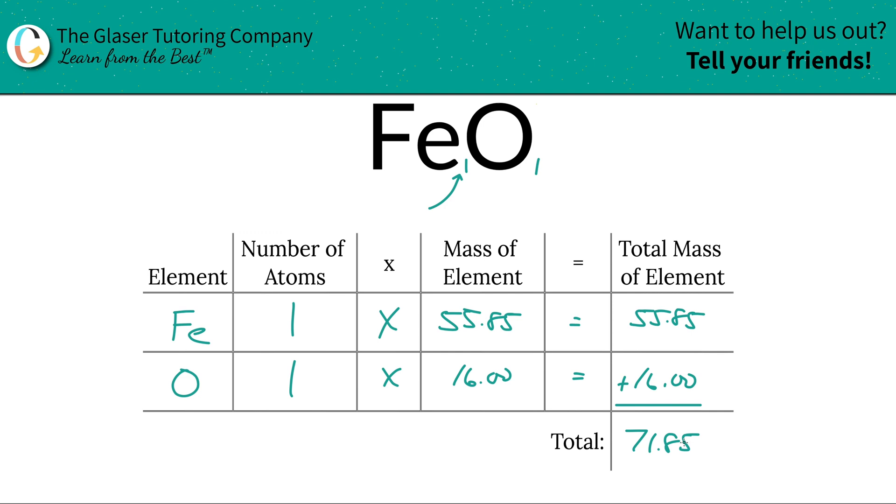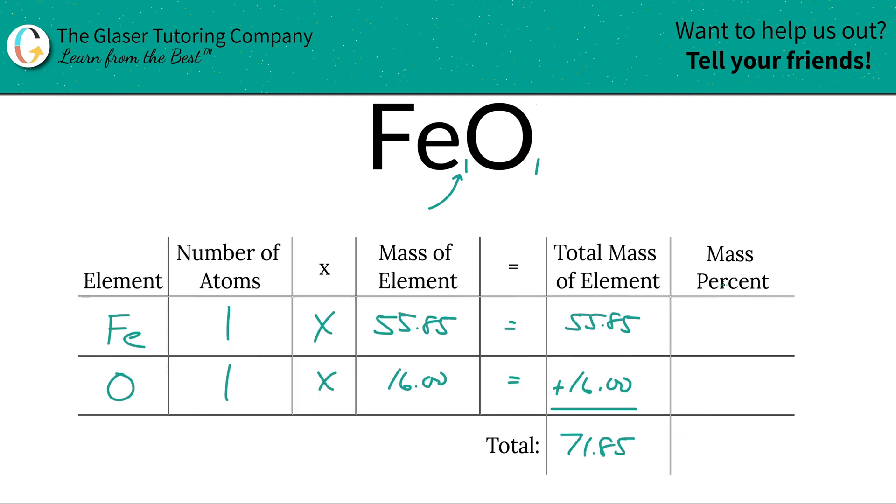And there it is. There's the mass now, right? So we have to find the mass first, the total mass of the entire compound. Now we can find those percents. Simply going to add another column to the table. Easy peasy from here.